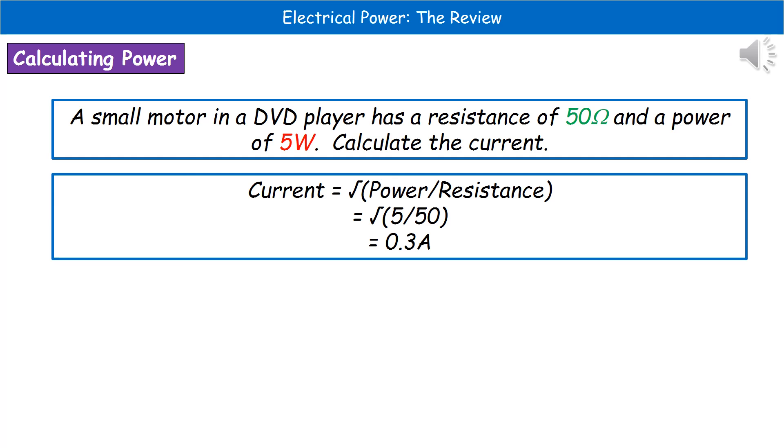Obviously, we can't just go straight into using our equation of power is potential difference times current, because we just don't have the information. We only have power for that one. We must therefore use the power is our current squared times resistance.